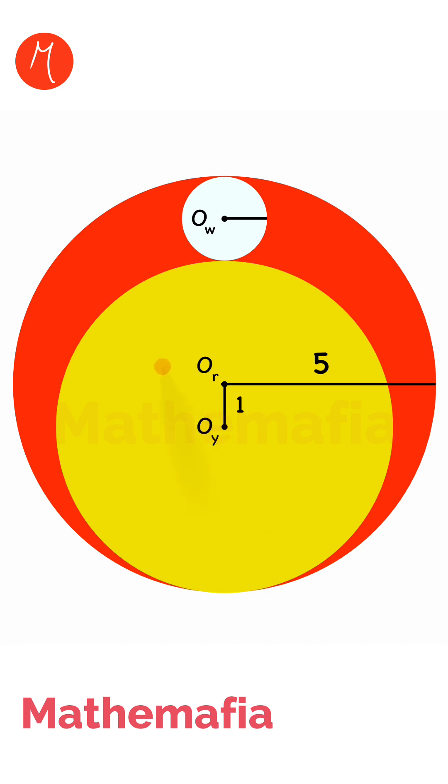We have three circles in this question: red, yellow, and white. Or is the center of the red circle, Oy is the center of the yellow circle, and Ow is the center of the white circle. The white circle touches the red and yellow circles.